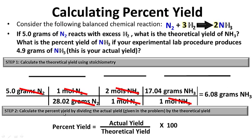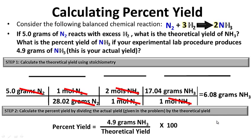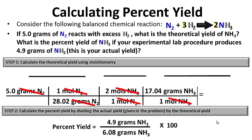Step two: calculate the percent yield by dividing the actual yield given in the problem by the theoretical yield calculated using stoichiometry. So 4.9 grams (actual yield) divided by 6.08 grams (theoretical yield), multiplied by 100, gives us an 80.59% yield — which is pretty good. The closer to 100%, the more productive and efficient the reaction is.